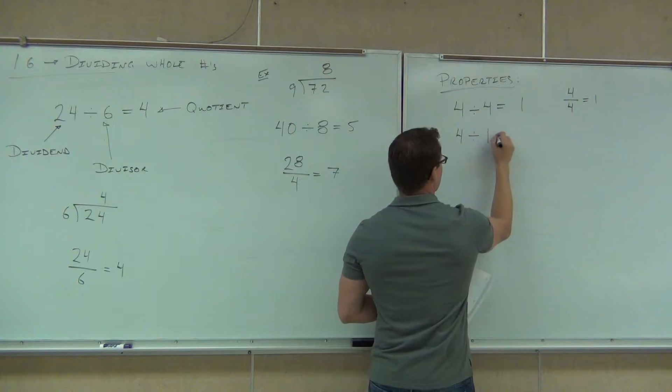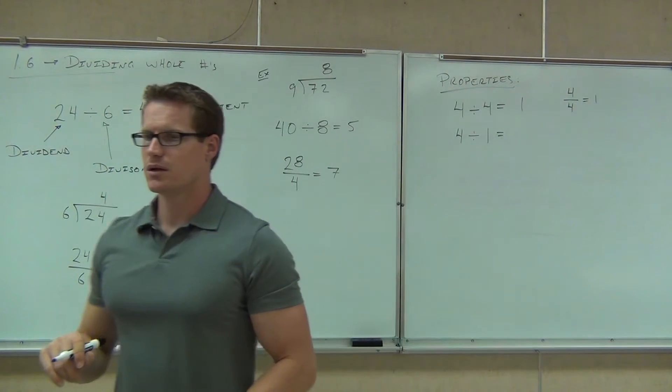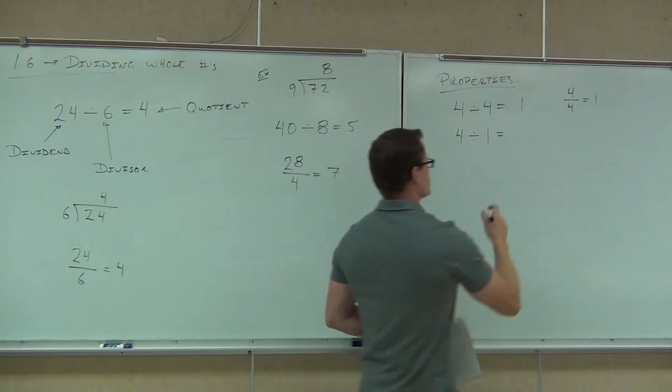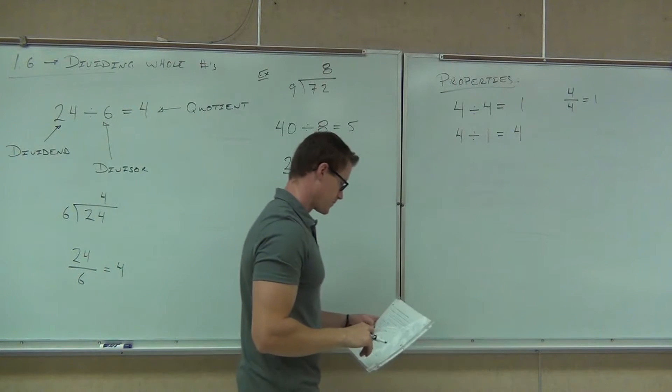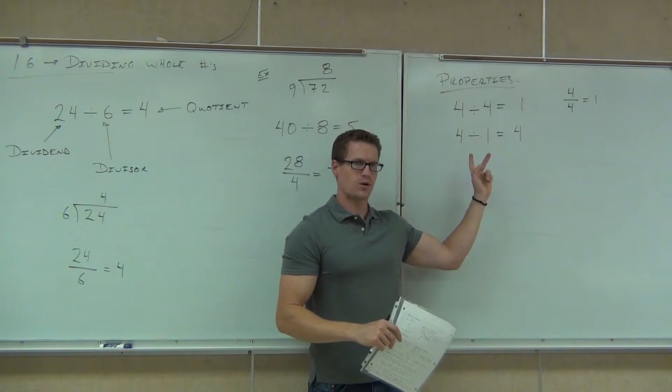What happens whenever we divide a number by one? What are we going to get? It's the same number. So whether it's four or any other number, if I divide it by one, I'm going to get that number back again. That's an identity. It's called an identity. By the way, is the reverse true? Can I divide one by four and get four?